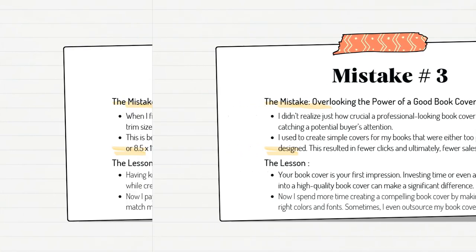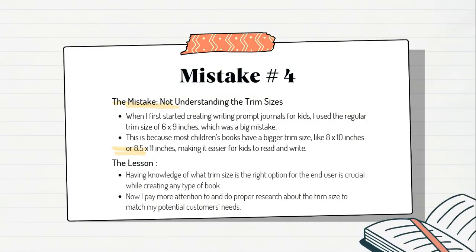KDP mistake number four was not understanding trim sizes. When I first started creating writing prompts journals for kids, I used the regular trim size of 6x9 inches, which was a big mistake. Most children's books have a bigger trim size like 8x10 inches or 8.5x11 inches, making it easier for kids to read and write.